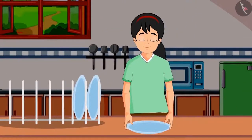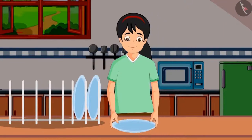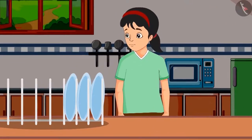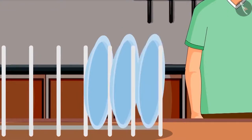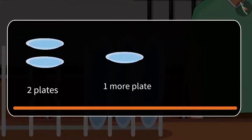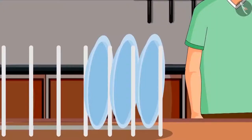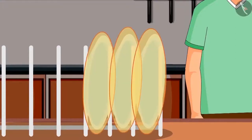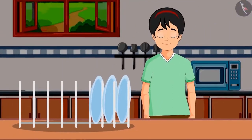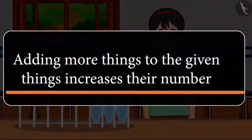She saw one more plate and thought of setting that too on the shelf. There were already two plates. After setting one more plate, how many plates are there on the shelf? That's right — two plates and one more plate is three plates. Which means in total there are now three plates on the shelf. So friends, you saw that adding more things to the given things increases their number.